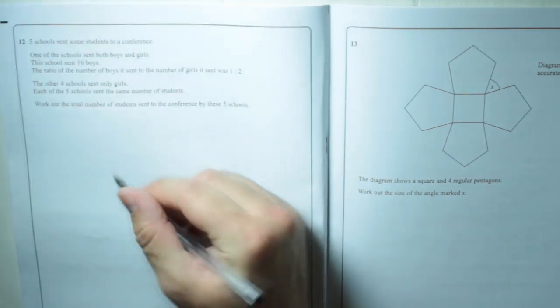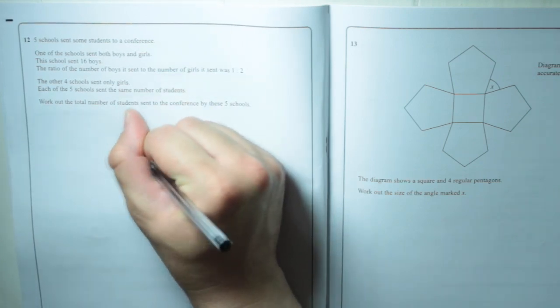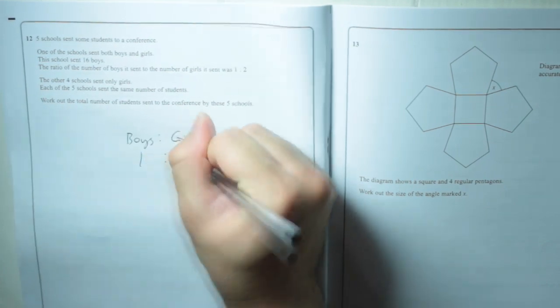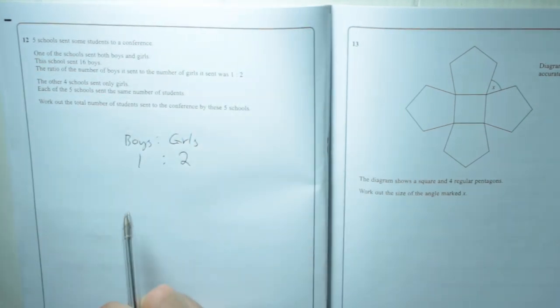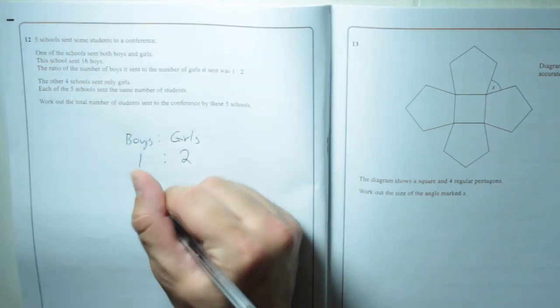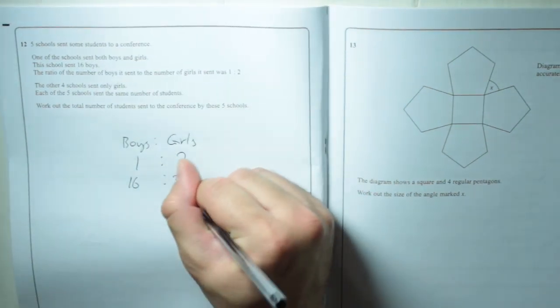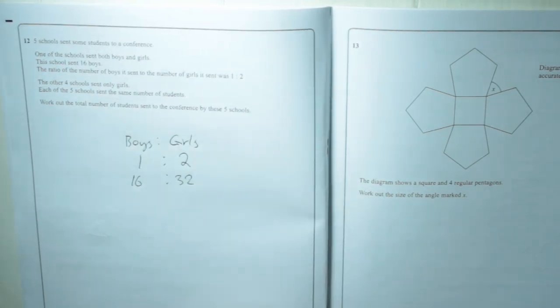So the ratio of boys to girls is 1 to 2. We know that they sent 16 boys, which means you've got to double it, which is 32 girls.